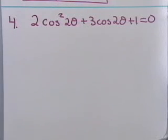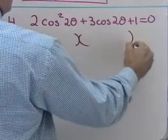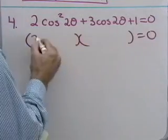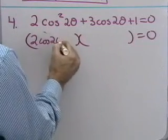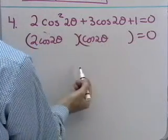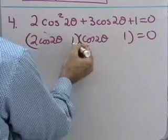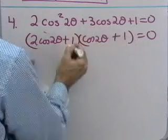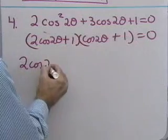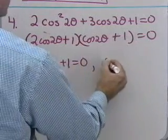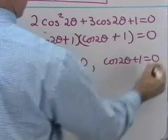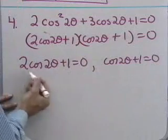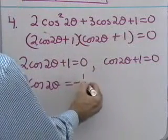The next problem is a quadratic: 2 cosine squared 2 theta plus 3 cosine 2 theta plus 1 equals 0. This factors as (2 cosine 2 theta plus 1)(cosine 2 theta plus 1) equals 0. Setting each factor to zero: 2 cosine 2 theta plus 1 equals 0 gives cosine 2 theta equals negative one half; and cosine 2 theta plus 1 equals 0 gives cosine 2 theta equals negative 1.